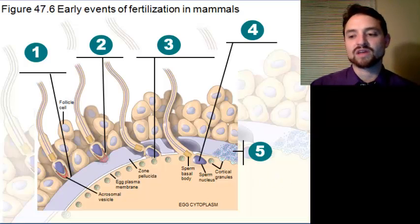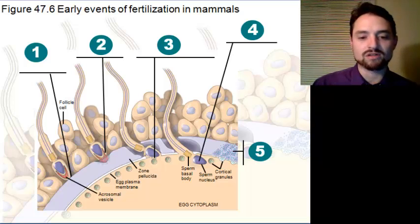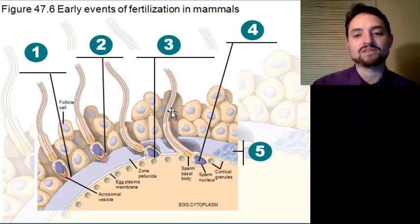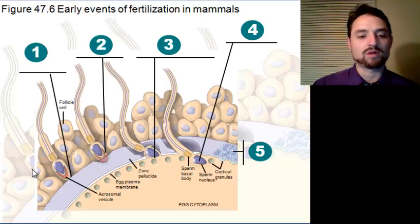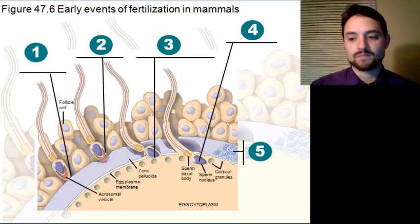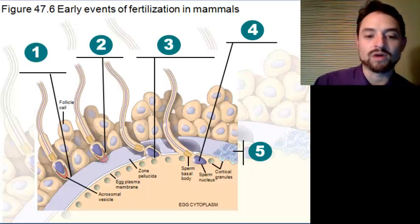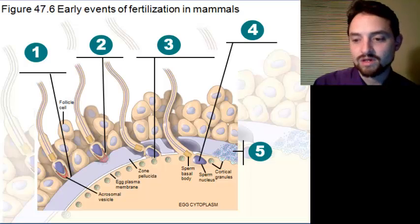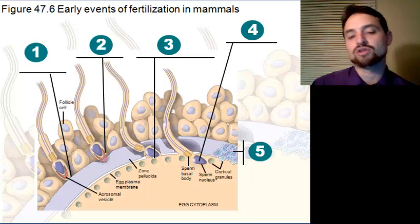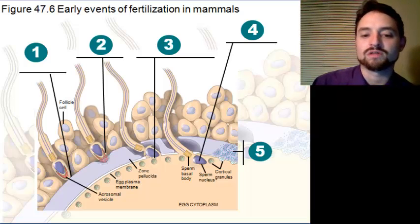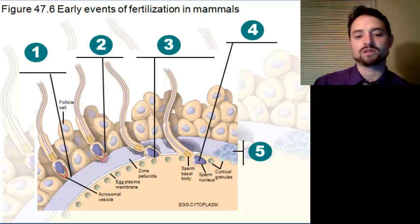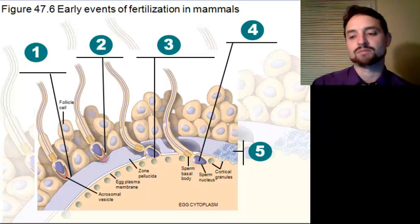In mammals, the five steps are similar but with key differences. First, sperm migrates through a coat of follicle cells not present in sea urchins, then binds to receptor molecules on the zona pellucida of the egg. The acrosomal reaction releases hydrolytic enzymes into the zona pellucida, causing its breakdown and allowing the sperm to reach the egg's plasma membrane. The membrane proteins of the sperm bind to receptors on the egg membrane, the two membranes fuse, and the sperm nucleus and other components enter the egg. Enzymes released during the cortical reaction harden the zona pellucida, blocking polyspermy.